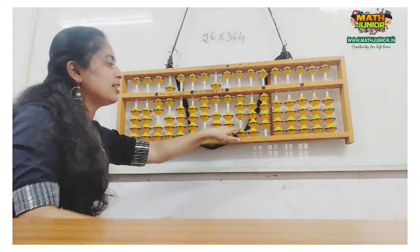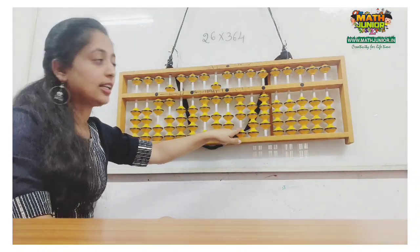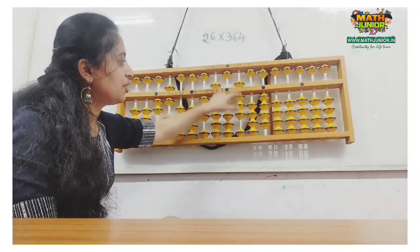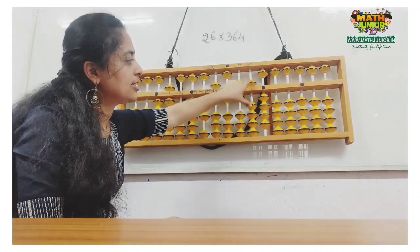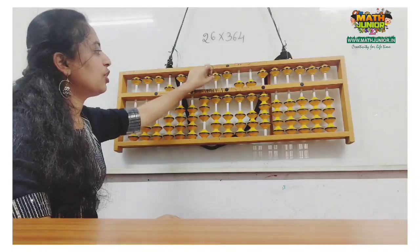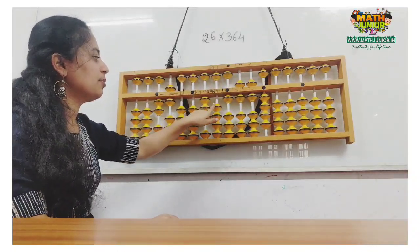Next, 6 sixes are 36. I cannot add 30 directly, so plus 50 minus 20 and add 6 directly. The work with 6 is done. I remove 6 from here.